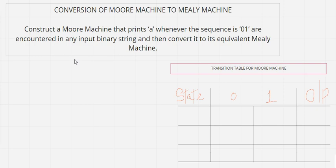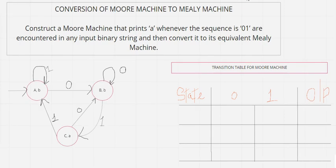You can pause the video now, as you have already understood the construction of a Moore machine. If anyone has not viewed that particular video, you can go back to my previous video where we did the design process of Moore machine and Mealy machine. So you can pause and construct the Moore machine. I got the Moore machine — I think this entire diagram was already done in my previous video, so it should be clear to everyone.